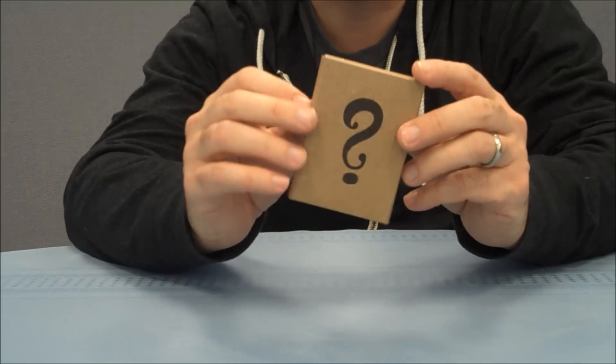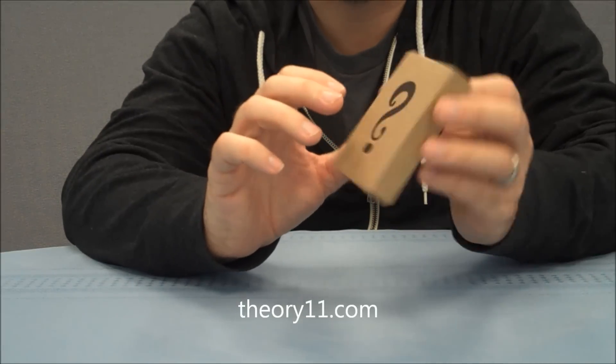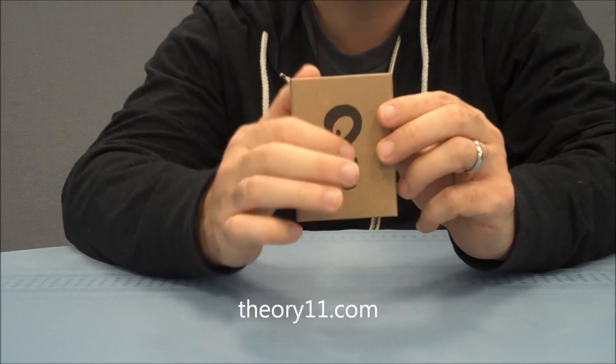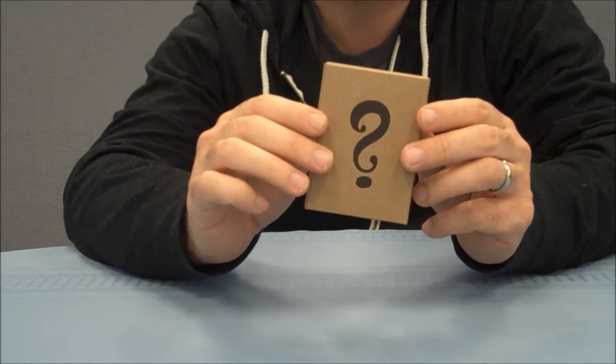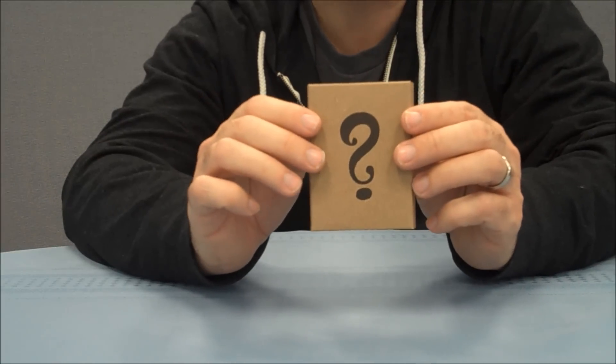When you first buy the mystery box from Theory 11, it does come in this brown paper wrapper and it has the black pressed, almost burned image of a question mark there. And so I opened mine. So let's get into the cards.